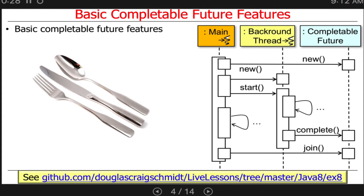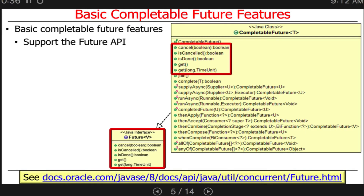So let's talk about what the basic features are. I'll be showing an example here you can take a look at. This will show you all the stuff we're about to talk about, and you can walk through it in more detail if you're curious. The basic completable futures API looks quite a bit like the futures API. In fact, completable future implements future, so you can see we have the same methods there, plus a few more.